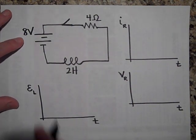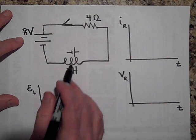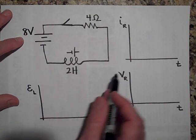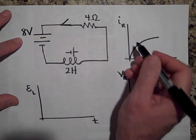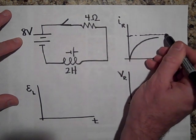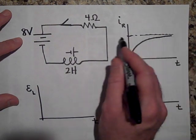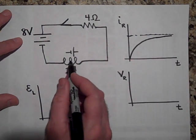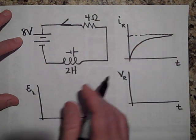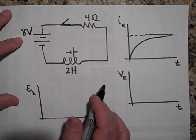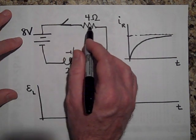What's going to happen is when you close this switch, the inductor is going to try to stop the current from changing, and it will be successful only at t equals zero. After that, the current will build and build, approaching an asymptote. In the end, inductors behave like long wires once the current stops changing in them.